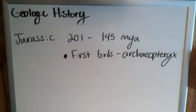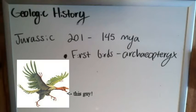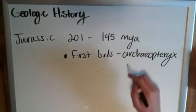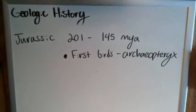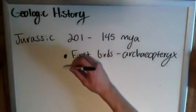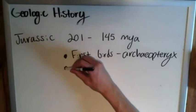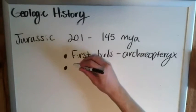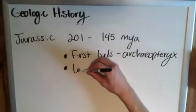Archaeopteryx — probably spelled that right, it's a nasty name — is that skinny-looking, half-bird, half-reptile-looking kind of thing. It is classified as the first bird, as its name implies. I believe it's Greek or Latin, and it basically means 'first' or 'original bird.' Also pertaining to life, we have the prevalence of large herbivores.